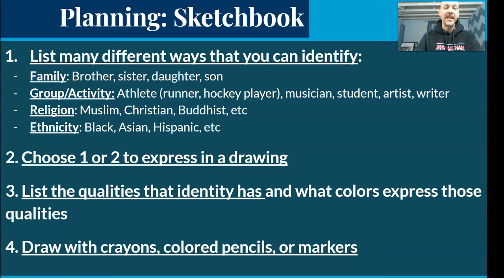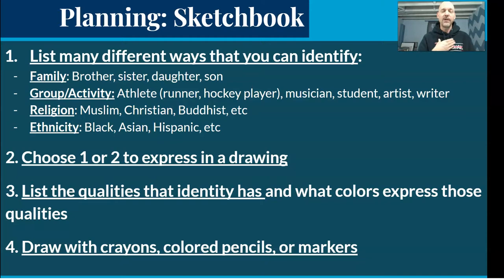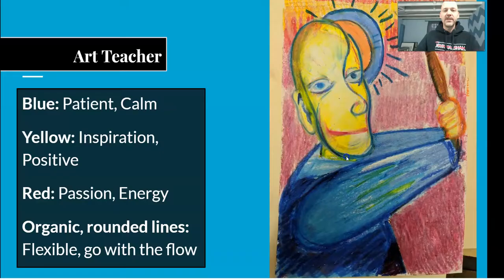Black, Asian, Hispanic — all of these things make up who you are. Don't try to do all of that at once — that would be a lot. But what's important to you? You're going to figure out: okay, if I'm a brother, if I'm a father, what qualities does a father have? I'm a teacher — what qualities does a teacher have?